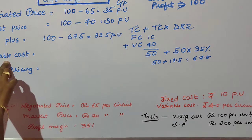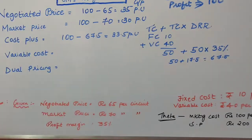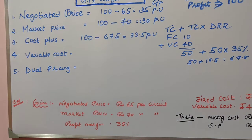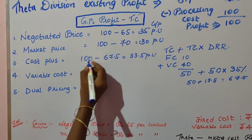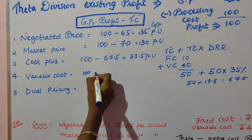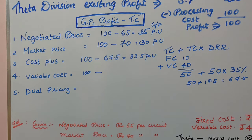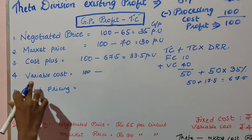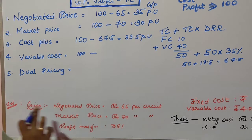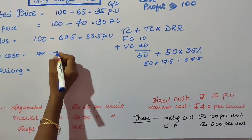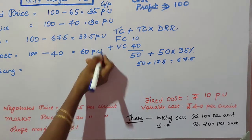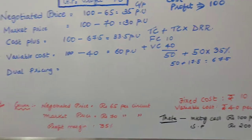Coming to the fourth method — variable cost pricing. Under variable cost, the transfer cost is the variable cost of the product. Variable cost given in the question is 40. So profit (100) minus transfer cost (40) equals 60 per unit gross profit under the variable cost method.